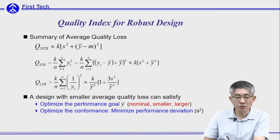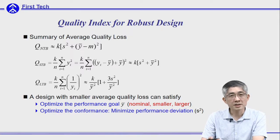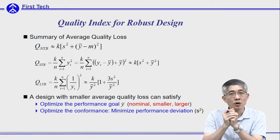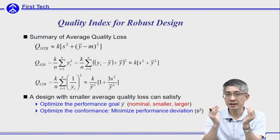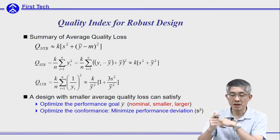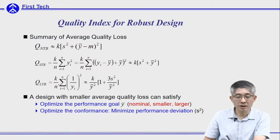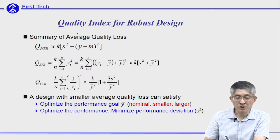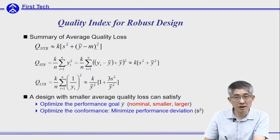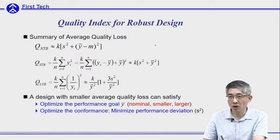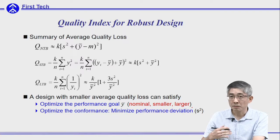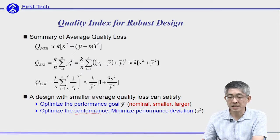In summary, these three average quality loss formulations cover all cases. In robust design, we consider not only the average output — whether larger-the-better, smaller-the-better, or nominal-the-best — but also the conformance, represented by the standard deviation. We want the standard deviation of your performance to be as small as possible. This average quality loss is a suitable criteria for design quality, as it accounts for both achieving the performance target and minimizing performance deviation.